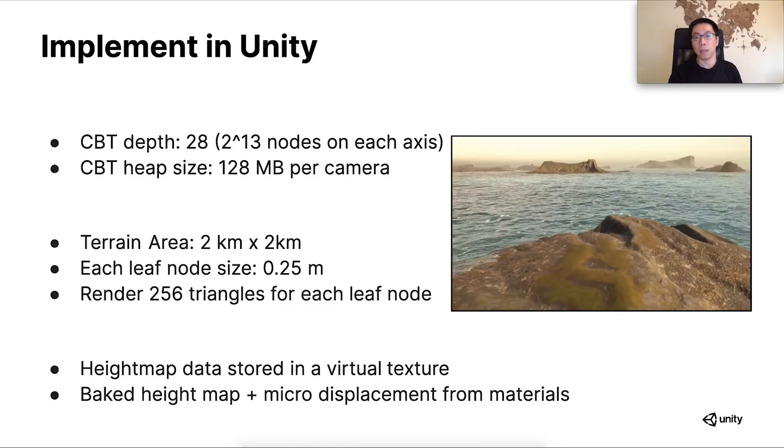The terrain you have just seen in the video uses a CBT with a maximum depth of 28. This means that over the entire 2 by 2 km area, each leaf node represents an area of a quarter by a quarter meter. This is less than the resolution we want to achieve. So instead of rendering just one triangle for every leaf node, we further render 256 triangles, which we refer to as meshlets, to reach the resolution we wanted. I'll explain in detail in the next slide, but eventually in the video the terrain triangles can be as small as 1.5 cm.